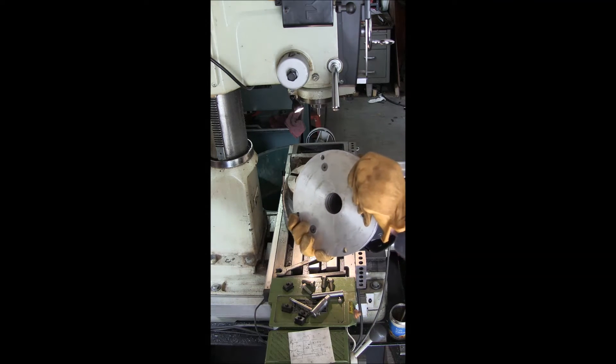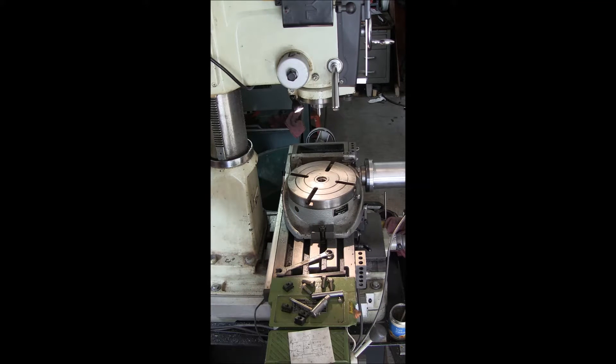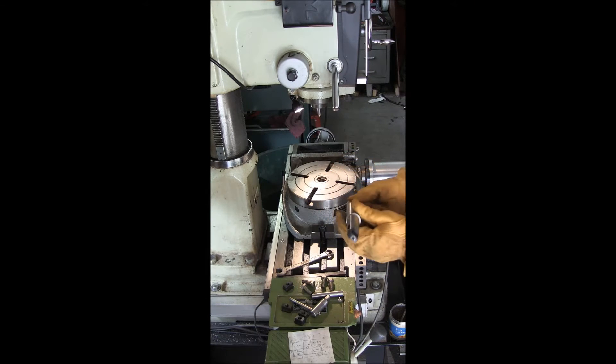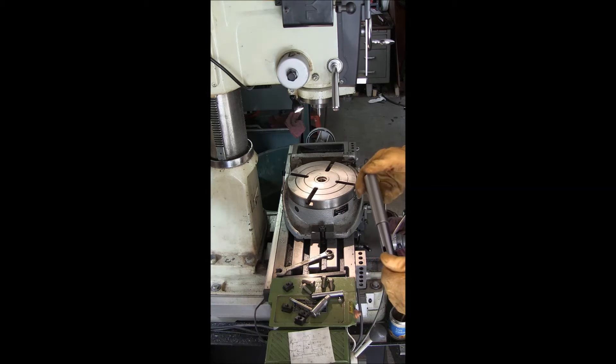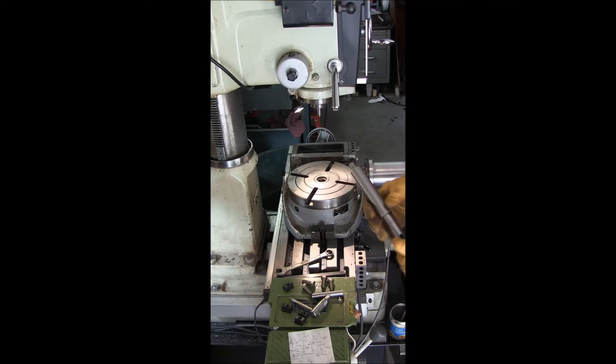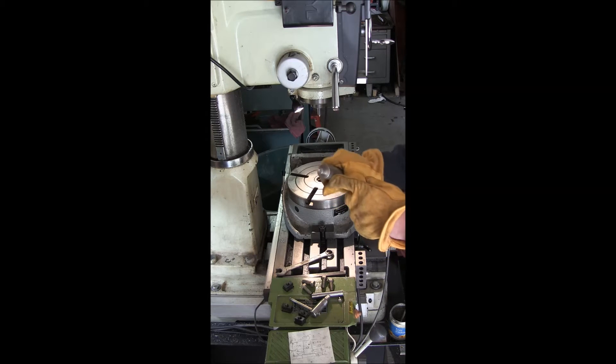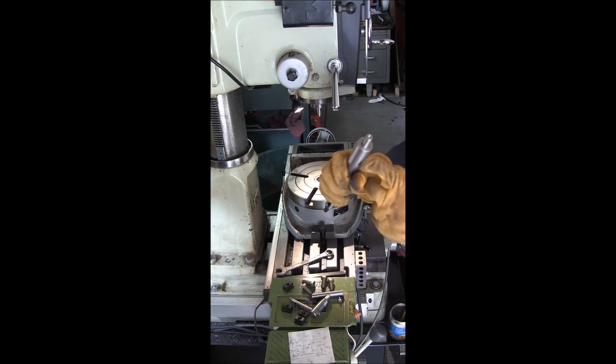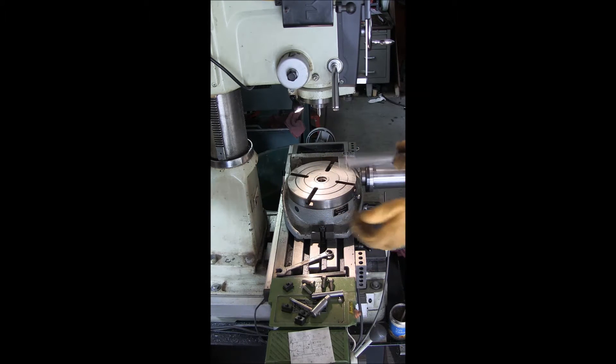Then I made this arbor, which is a Morse taper 3 to a straight shank. In the end of it I have a center hole, center drilled. I made this as precise as I could on my lathe, turned it real carefully.